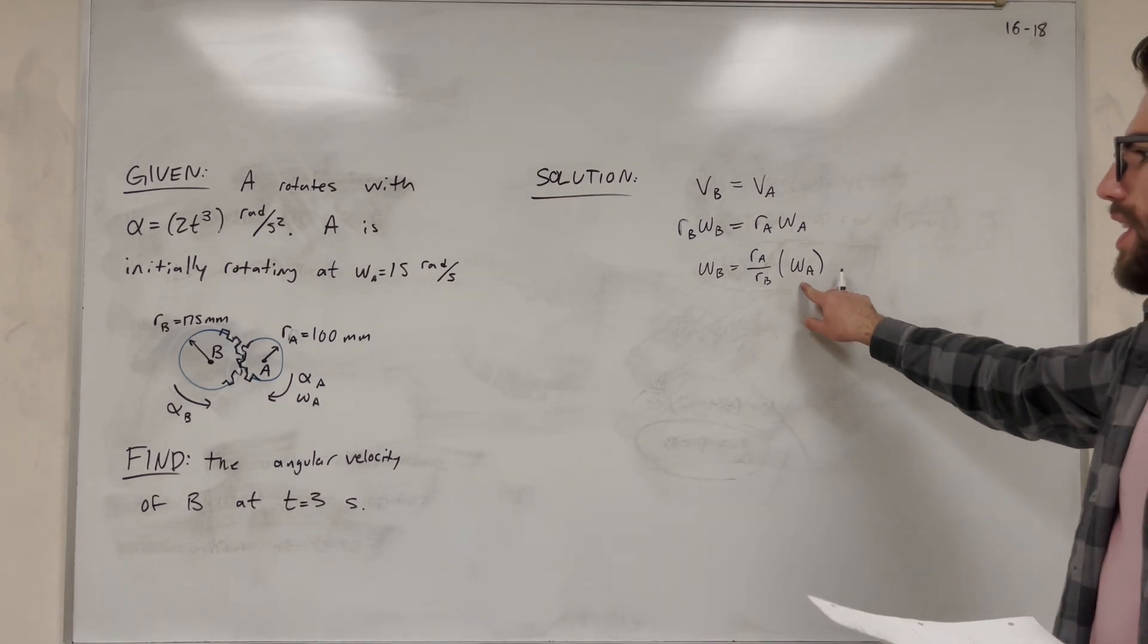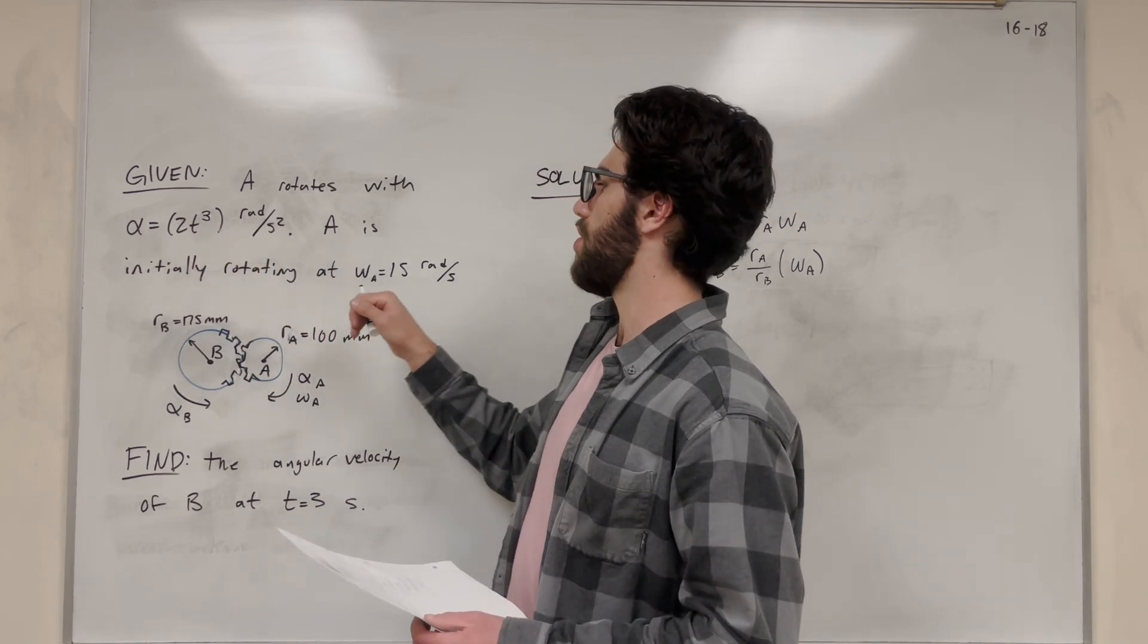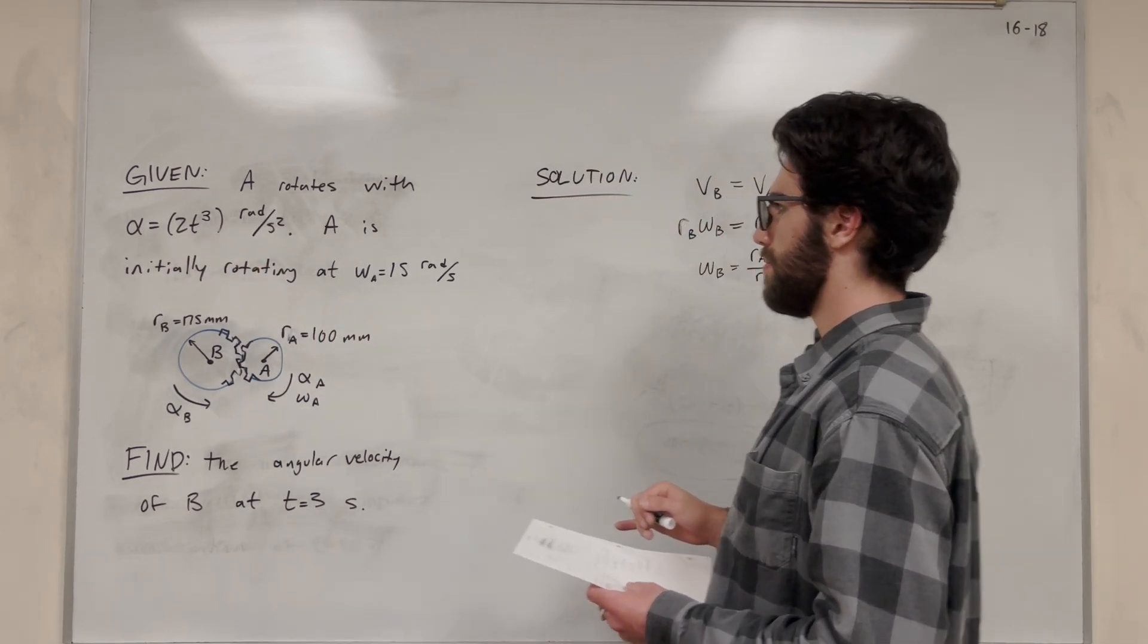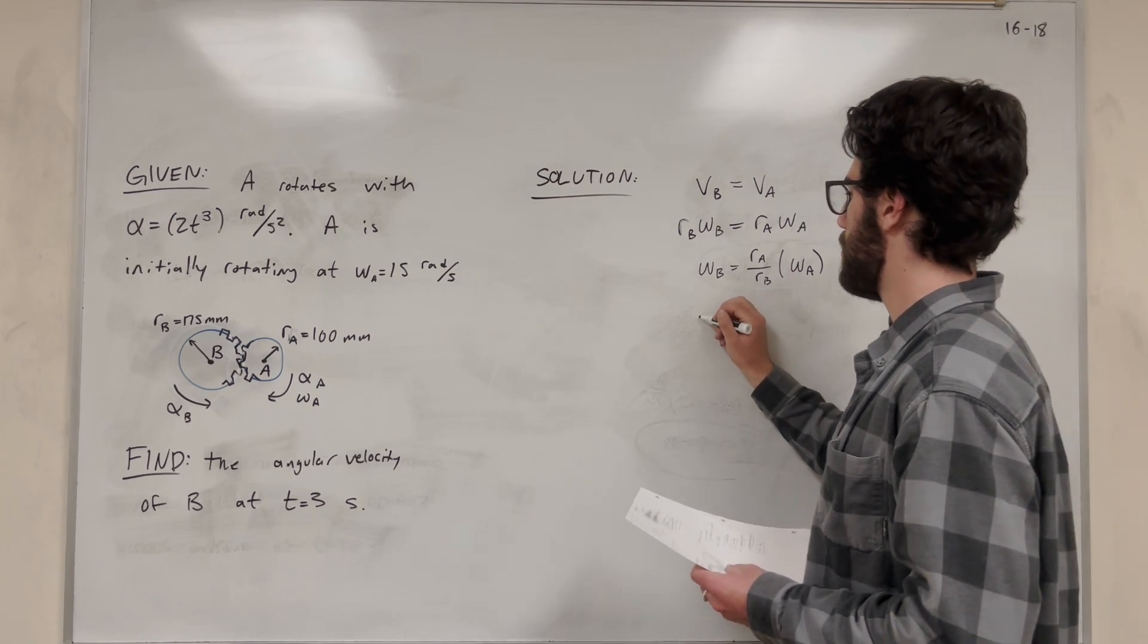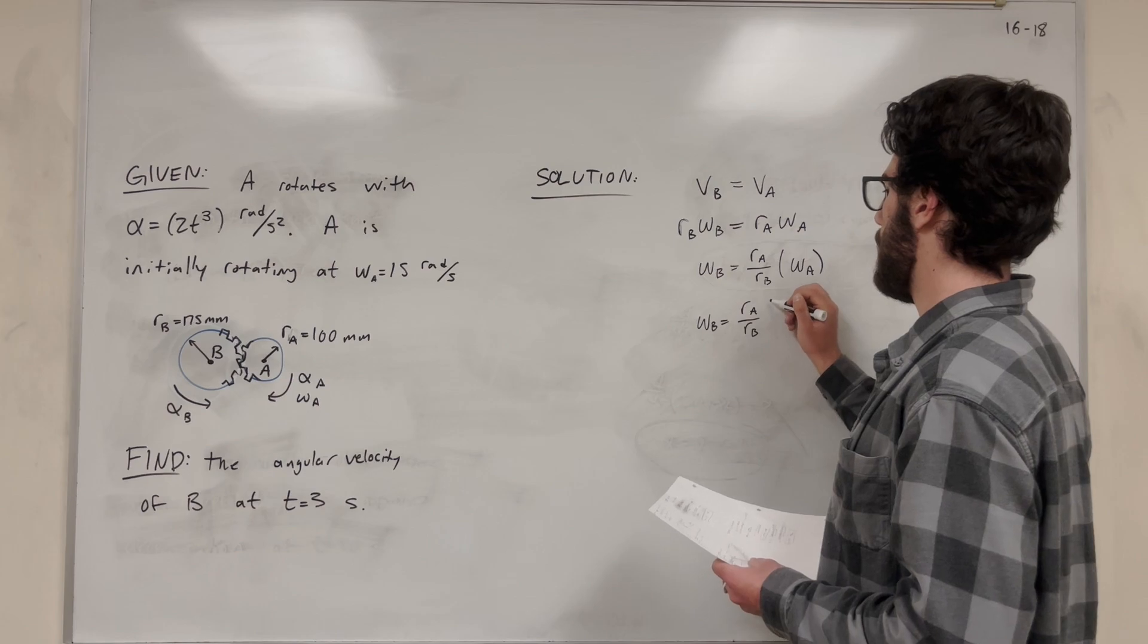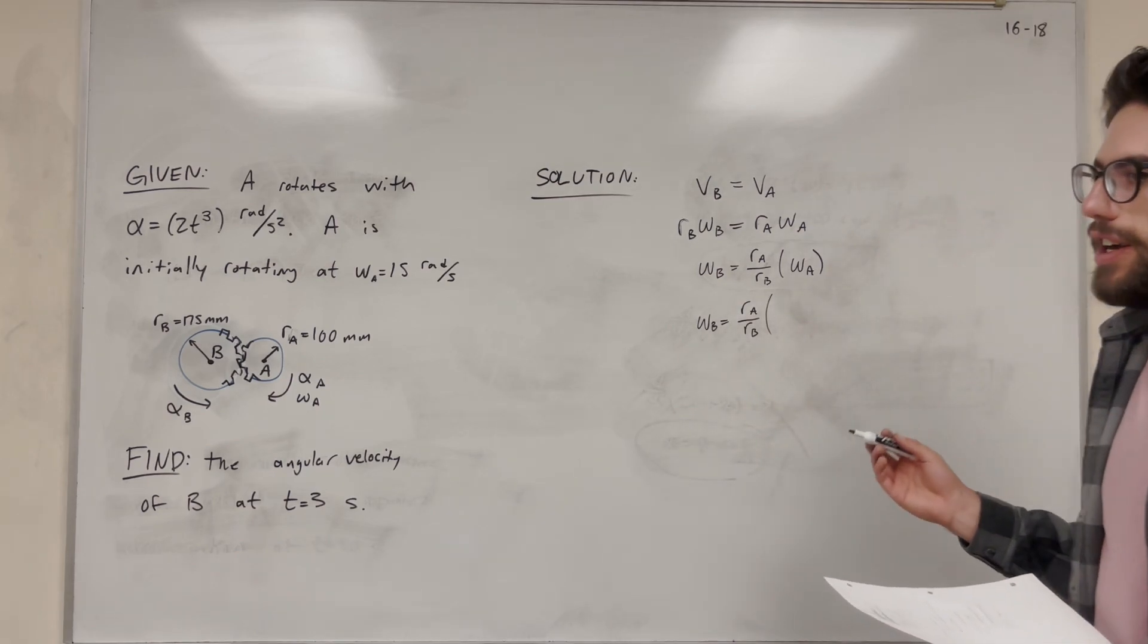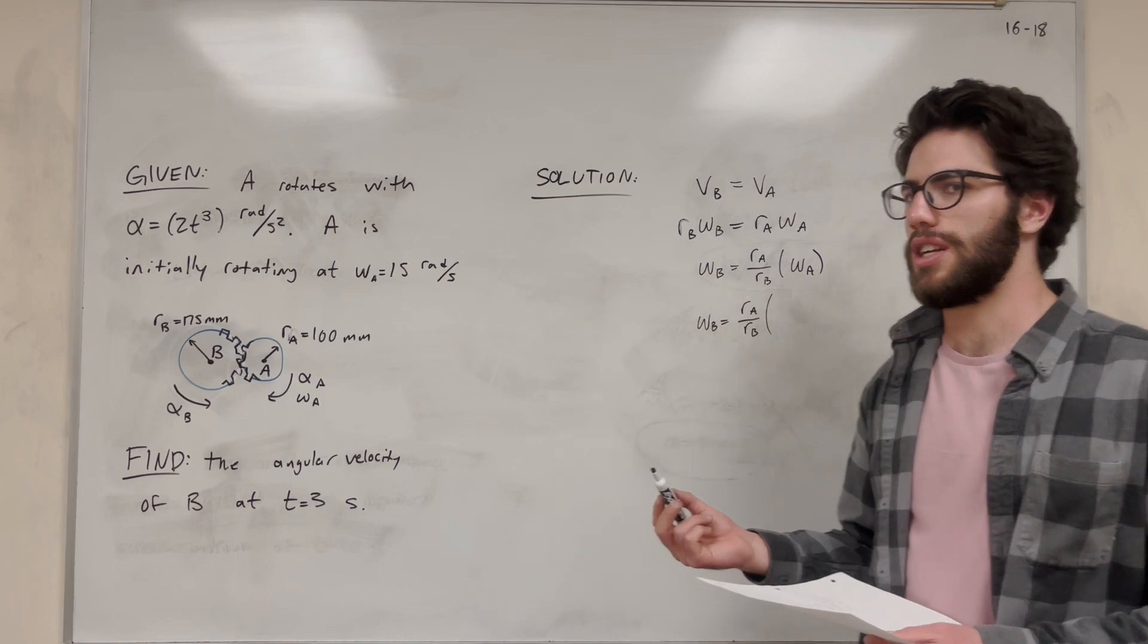Okay, so the problem here is we're not actually given the angular velocity of A. We're given the angular acceleration of A and the initial angular velocity. So how are we going to do this? Well, let's plug in what we know. This equals radius of A over radius of B. And what do we know about angular velocity?